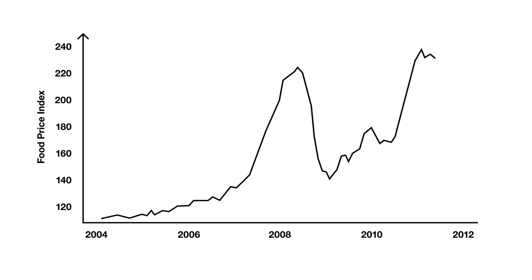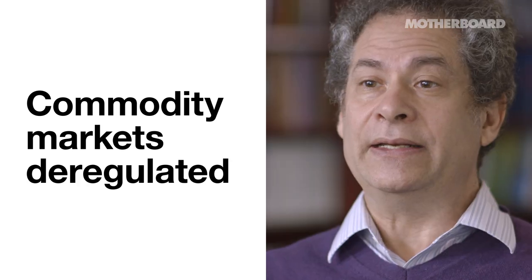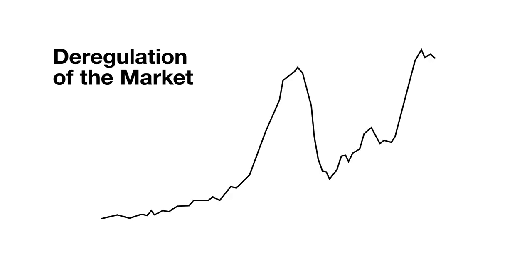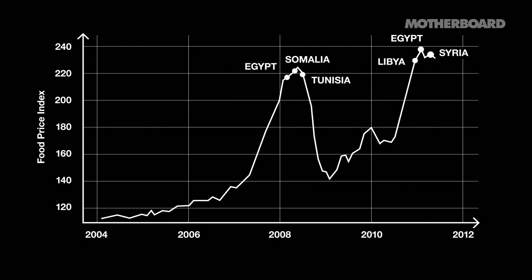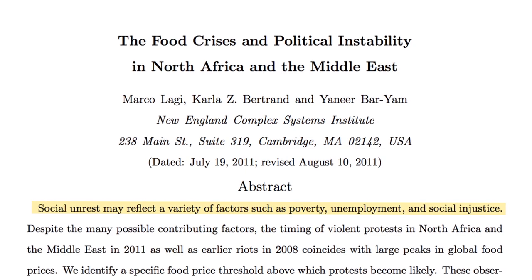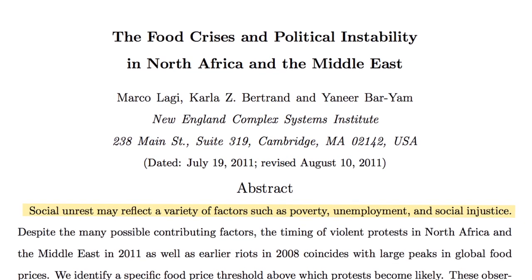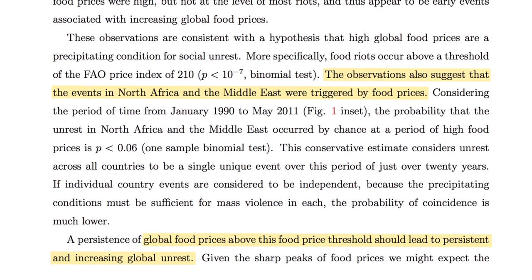Then prices went down, and then again they went up in 2010 and 2011. That's when the Arab Spring took place. The key policy decision relevant to this is that the commodity markets were deregulated in 1999-2000. The deregulation of the markets leads to peaks that lie on top of a gradual increase due to the ethanol policy. The peaks are the triggers of the food riots and the Arab Spring.